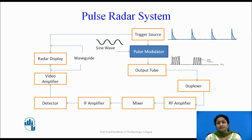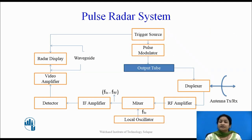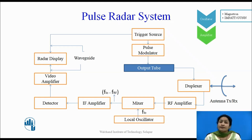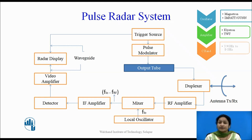This pulse waveform acts as an input to the output tube. The output tube generally consists of an oscillator. For high frequency, high power operation, it uses an IMPATT or Gunn diode — these are microwave devices used as oscillators. If the output tube acts as an amplifier, it uses a klystron tube or a TWT, which are also microwave devices. The signals generated from the output tube are in the frequency range of 3.9 GHz to 8 GHz, operating in the C band of a radar communication system.